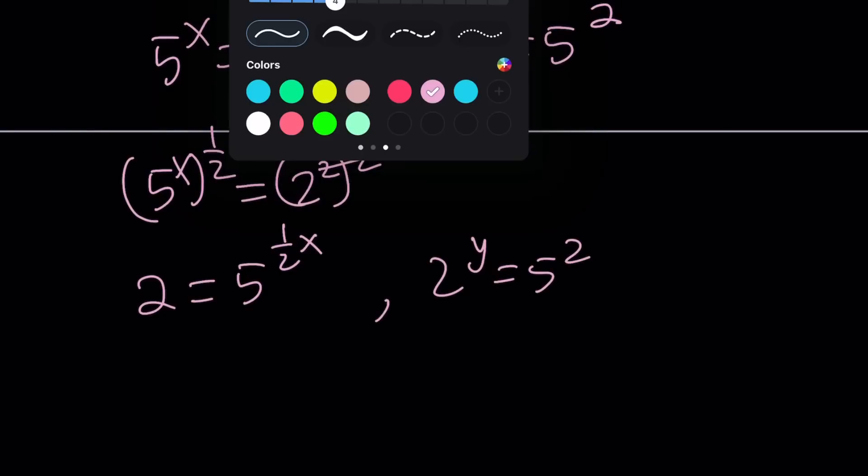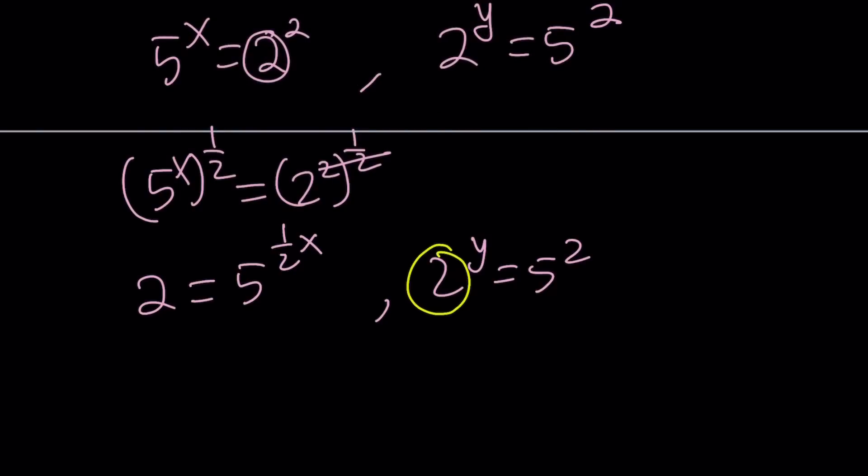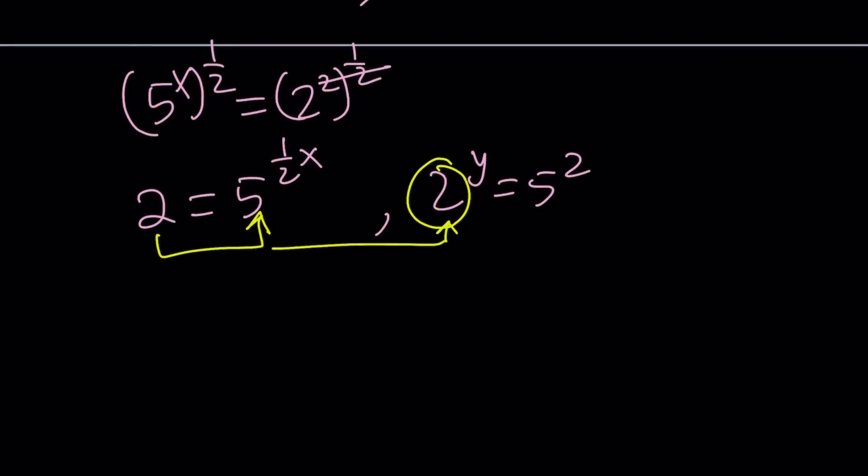Now this 2 can be replaced with this 2. Make sense? Like this. So replace the 2 with 5 to the power 1 half of x. Raise it to the power y. We're just following the steps here. And 5 squared. You see how smooth that is? Obviously. That was the whole purpose for this problem.